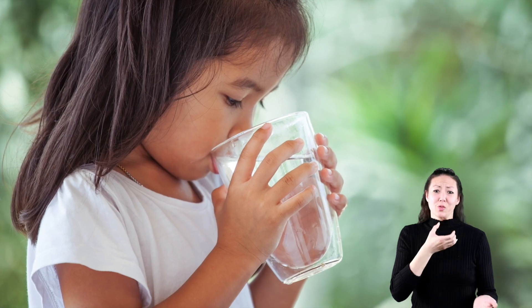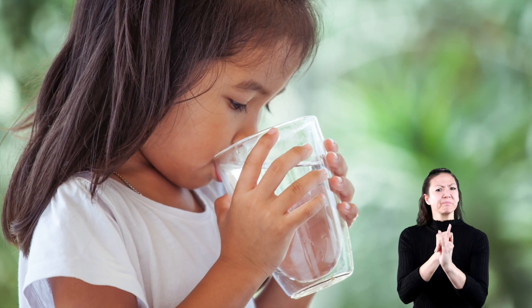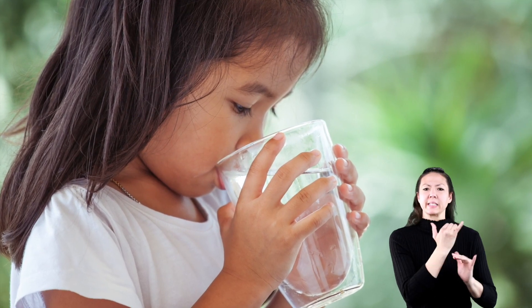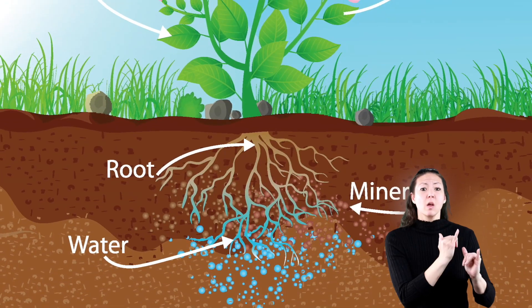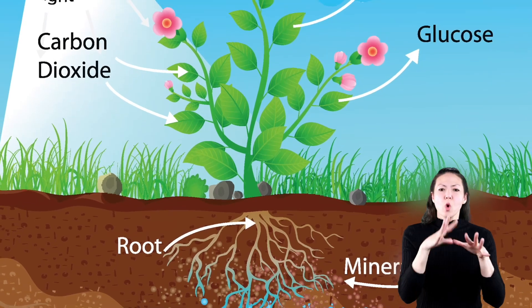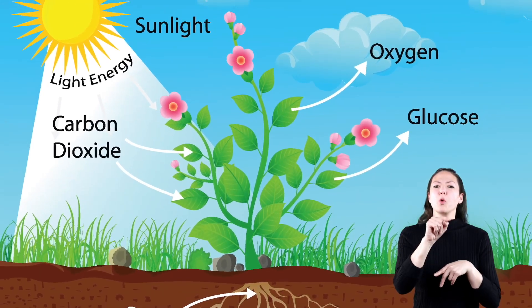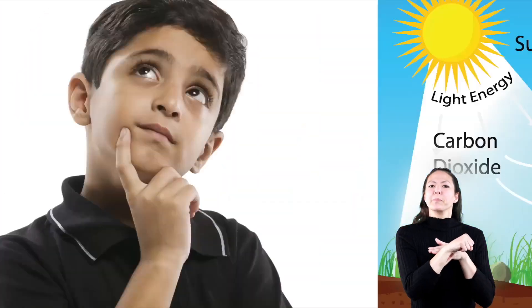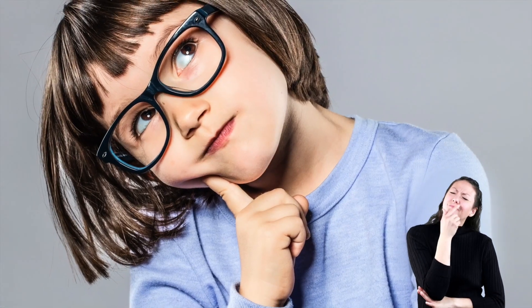Number two: plants need water. All living things need water — you need water just like plants. The water in the soil is absorbed into the roots of the plant and travels up into the leaves of the plant.